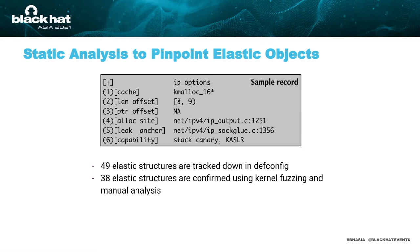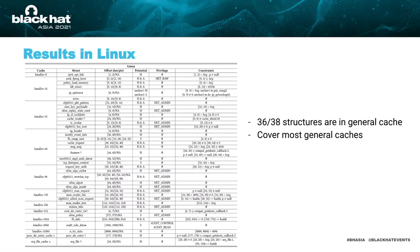In total, the static analysis tracks down 49 elastic structures in the default configuration. We used kernel fuzzing and manual analysis and confirmed 38 of them. We list these structures in a table, where the first column represents which cache the object can reside in, the second is the structure name, the third is the offset of length field and pointer field, the fourth is what sensitive data can be leaked, the fifth is the privilege required, and the last column is the path constraints. Most general caches are covered by our identified structures. Note that 36 and 38 are for structures, not objects — if we count the number of objects and program sites that use them, the statistics can be in the thousands. From this perspective, elastic objects are pervasive in the kernel codebase.